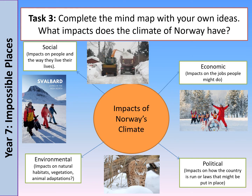The third task — and this is going to help you with the task you have to submit — is to complete the mind map with your own ideas of how Norway's climate, how much rain it has and how cold it gets, is going to impact people in Norway. Think about the jobs that people do, the environment and habitats, the animals that live there, and also any laws that might be put in place. Divide impacts into categories: social — impacts on people and the way they live their lives — and economic — impacts on the jobs that people do. Here I've got a picture of a ski instructor. Is that a job we'd have in this country? Probably not.